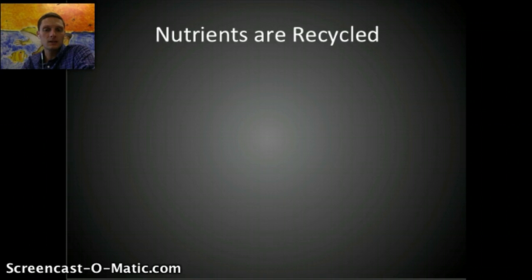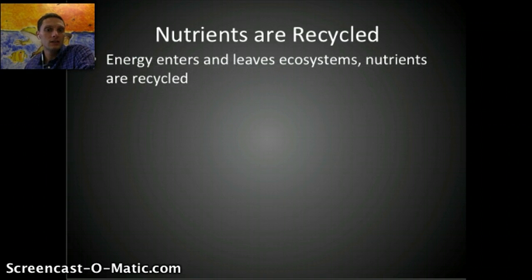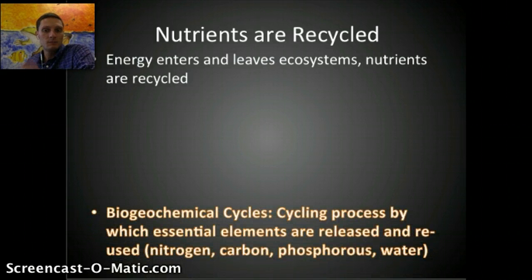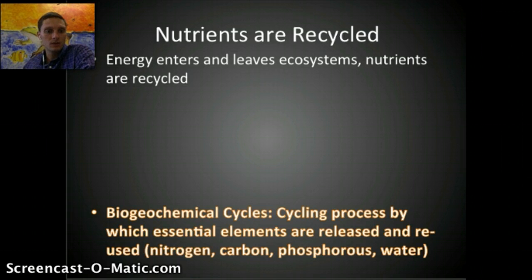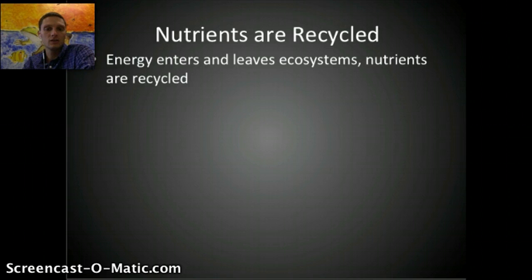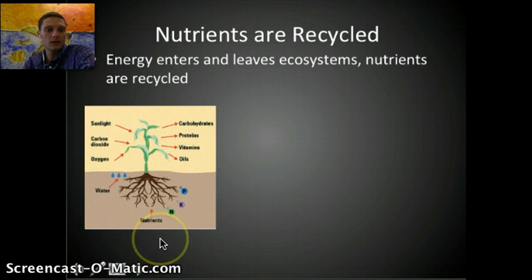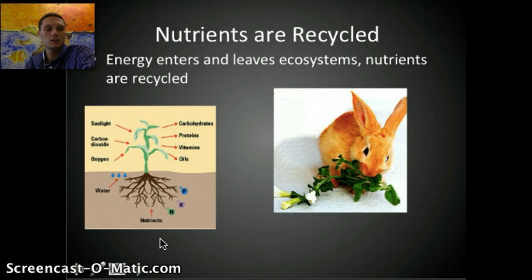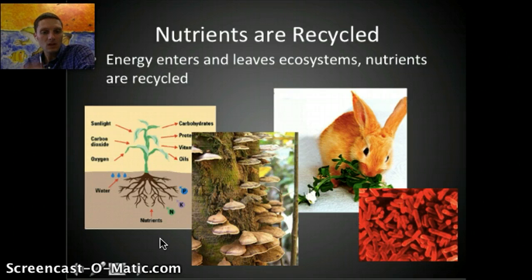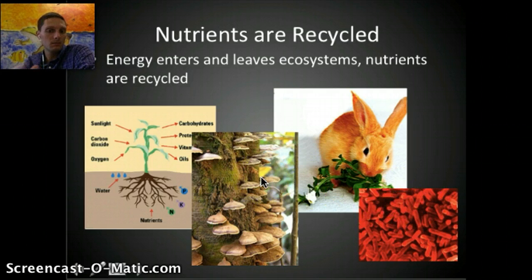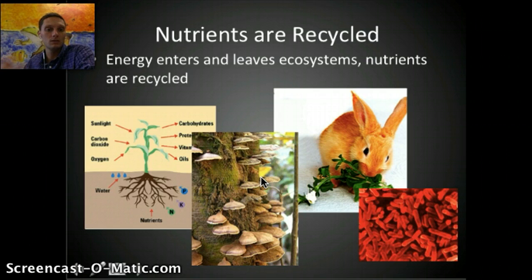Energy enters and leaves ecosystems, while nutrients are recycled through biogeochemical cycles — the process by which essential elements like nitrogen, carbon, phosphorus, and water are reused and recycled. Producers absorb CO₂ and minerals from the soil to create organic molecules. Consumers eat those plants, and when organisms die, the nutrients are re-released. Decomposers like bacteria and fungi release nutrients back into the soil, while detritivores and saprotrophs break down dead organisms into simpler substances — essential to the overall cycle of ecosystems.